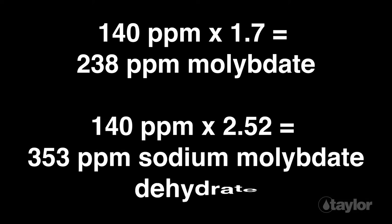Note: to convert the result to molybdate, multiply the molybdenum reading by 1.7. To convert to sodium molybdate dehydrate, multiply by 2.52.